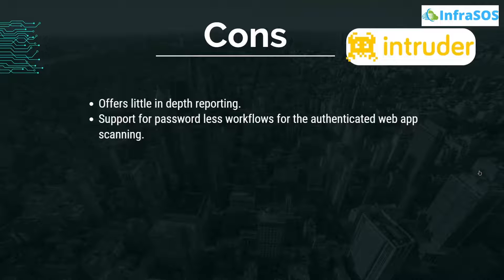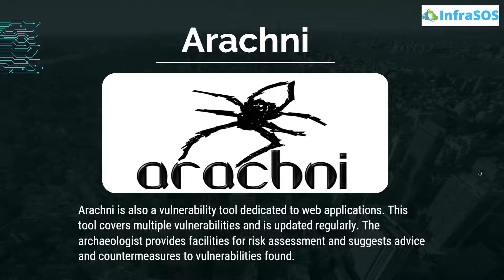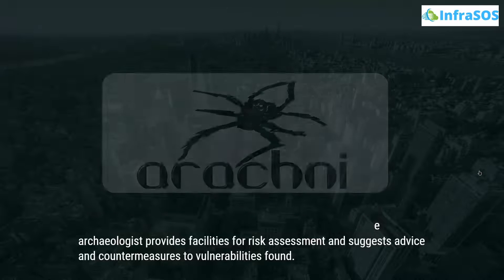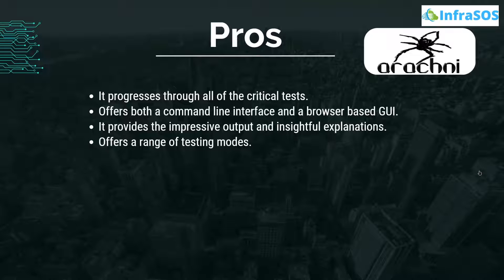Cons of Intruder.io include that it offers little in-depth reporting, and support for passwordless workflows for authenticated web app scanning is quite limited. At number twelve we have Arachni. Arachni is a vulnerability tool dedicated to web applications that covers multiple vulnerabilities. It provides facilities for risk assessment and suggests advice and countermeasures to vulnerabilities found during the scan. Pros include that it progresses through all critical tests, offers both a command-line interface and a browser-based GUI, provides impressive output and insightful explanations, and offers a wide range of testing modes.